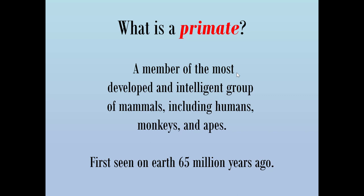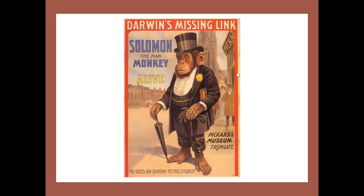There has been much archaeological evidence uncovered since the time of Darwin to further prove his theories. Today, most scientists do not consider evolution a theory anymore — they see it as fact. For years, it was believed Darwin's theory had a missing link: you'd start with one creature, evolve to another, but were missing a few steps in between. That was the downside of his argument.